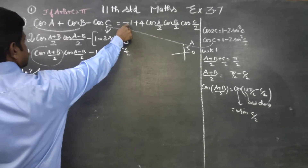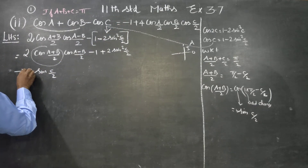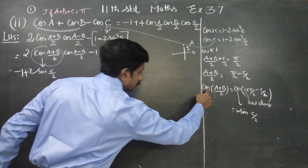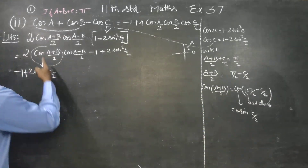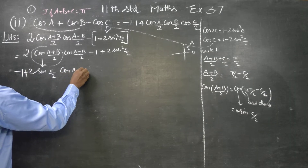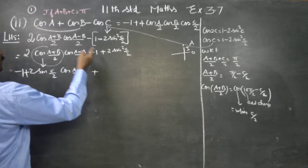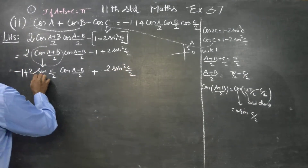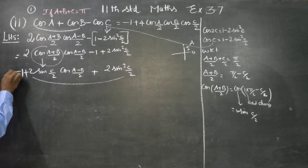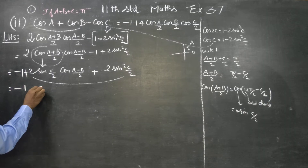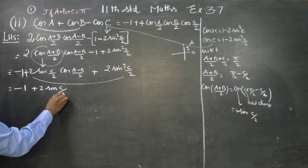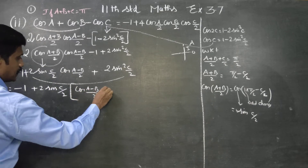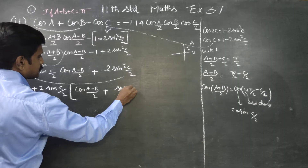Answer is starting: minus 1 here. Now, minus 2 sin(C/2) is common. The balance is cos((A-B)/2) plus sin(C/2).